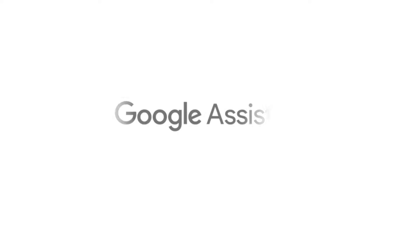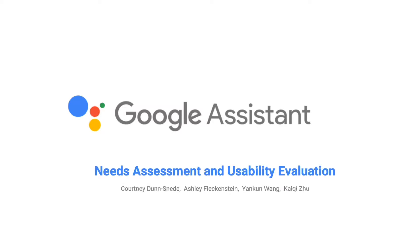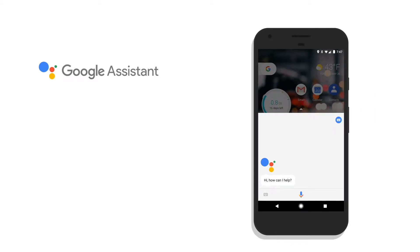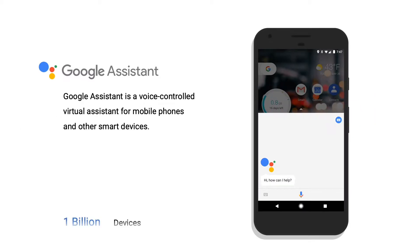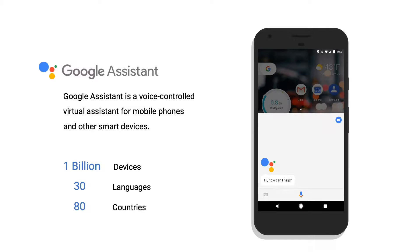Hi, welcome to our 622 project with Google in which we evaluated Google Assistant. We conducted this evaluation so our client could better understand its users and their usability issues. Google Assistant, or GA, is a voice-controlled virtual assistant for mobile phones and other smart devices. In January 2019, Google announced that GA would soon be installed on over 1 billion devices. It supports 30 languages in 80 countries.